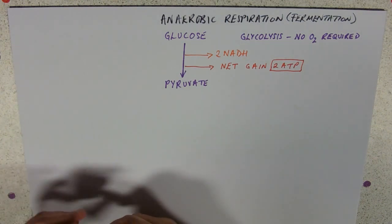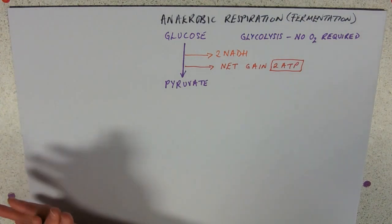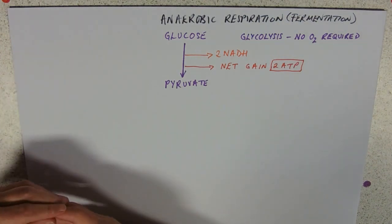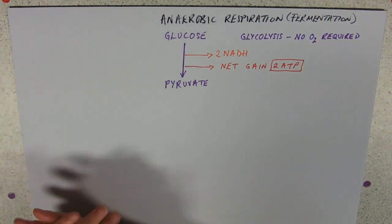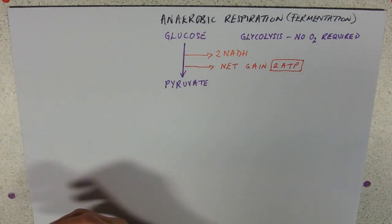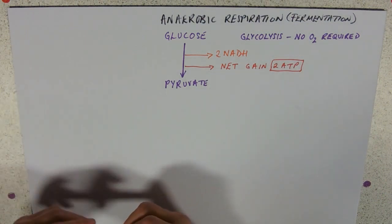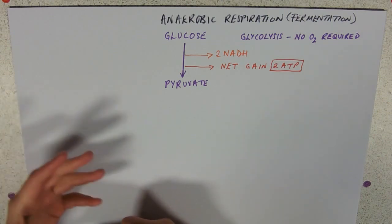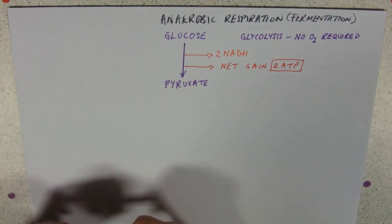In an exam, if you have to describe the reactions of anaerobic respiration, you need to fill in the detail of glycolysis — I can refer you to our earlier video on that. You need to describe the use of ATP and the release of NADH, and the release of ATP in the making of pyruvate.